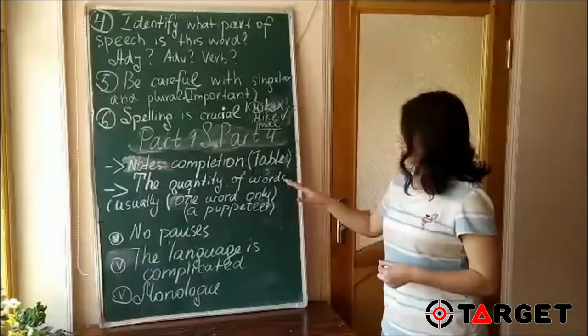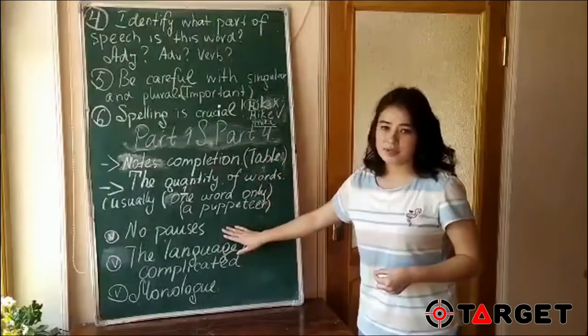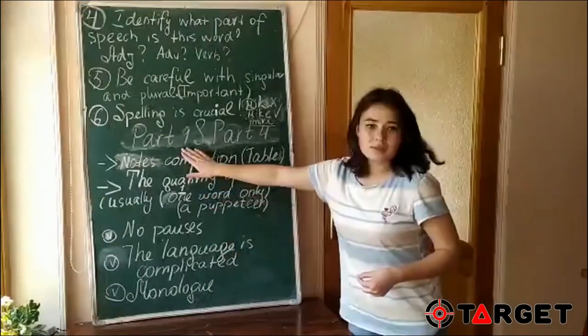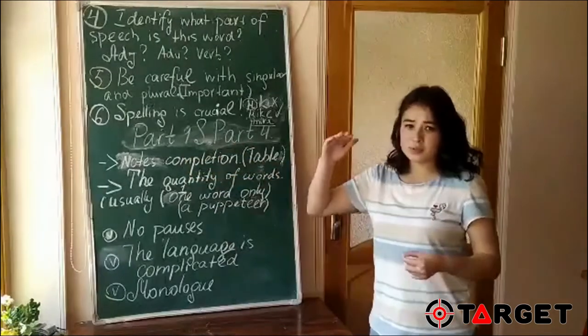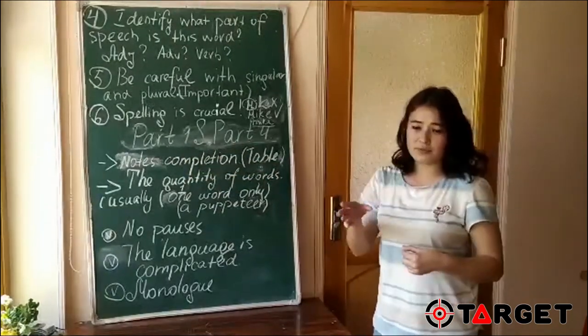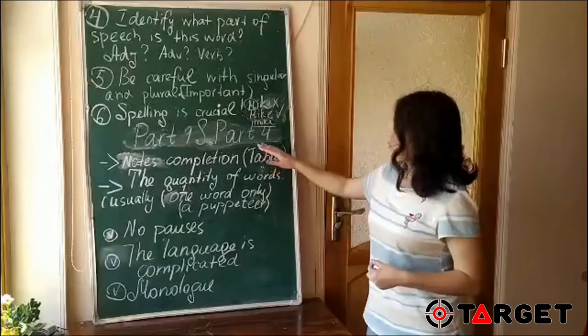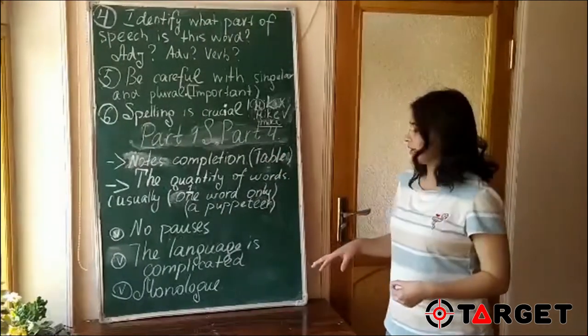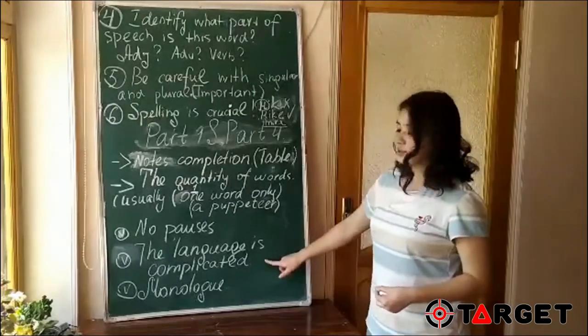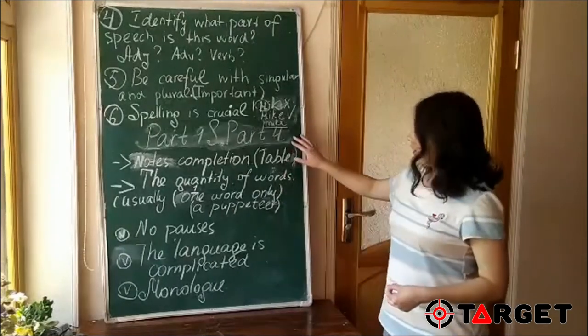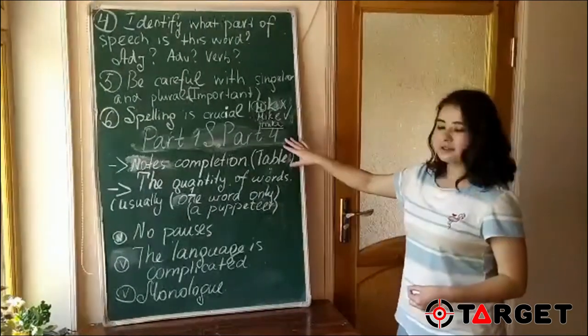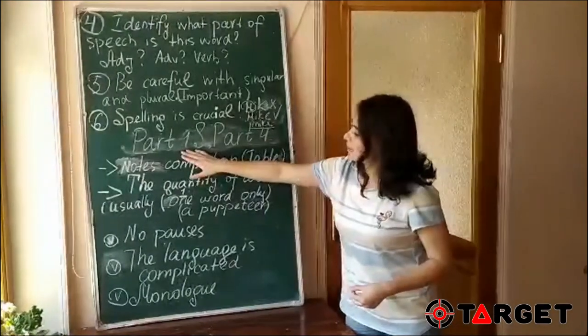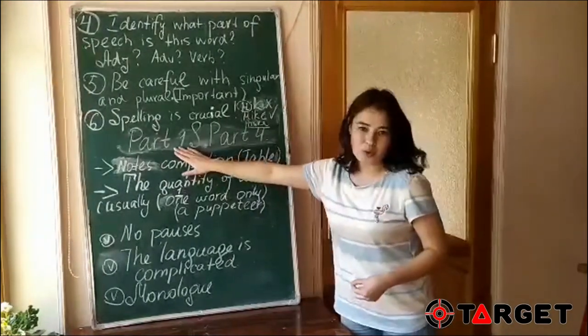About differences, usually in part four, there are no pauses at all. In part one, this is really easy because we make pauses between the questions, from one to five and five to ten. But in part four, we do not make any pauses, we go directly, we listen to the whole track. And secondly, the language is complicated. In other words, part four is the more complicated version of part one.